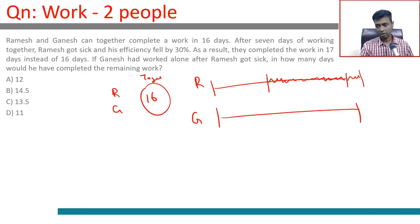One more day of broken Ramesh and an extra day of Ganesh was required because Ramesh turned up with lower efficiency. If Ganesh had worked alone after Ramesh got sick, in how many days would he have completed the remaining work?